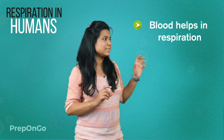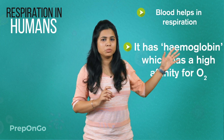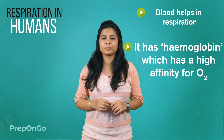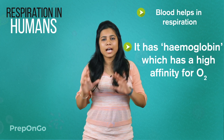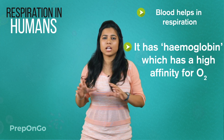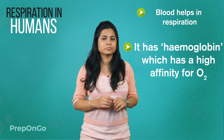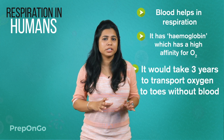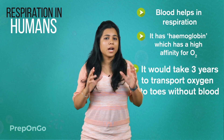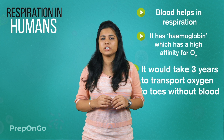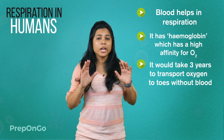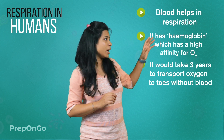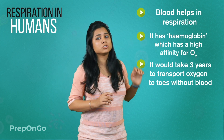Oxygen is carried by hemoglobin, which has a high affinity for oxygen. Carbon dioxide has a high affinity for blood, so it is transported in dissolved form. If hemoglobin or blood were not present for transportation, it would take three years for oxygenated blood to travel from the lungs to the toes.